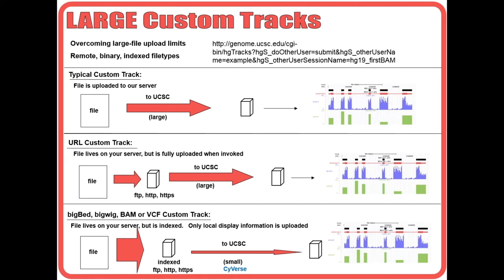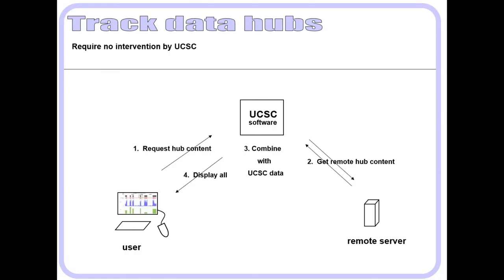Cyverse is a project that allows users to sign up for five gigabytes of data storage, available for loading directly into UCSC via the track hub mechanism or URL format. A lot of our users are molecular biologists who don't have easy access to an HTTP location for uploading data into the browser, and Cyverse is a way around that. We're also working to make Dropbox handle the byte range queries required to load data into the browser remotely.